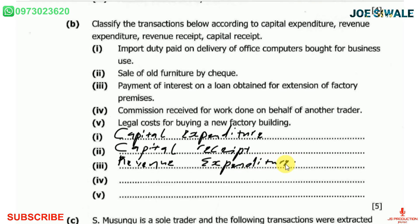Number four: commission received for work done on behalf of another trader. That is going to be revenue receipt.